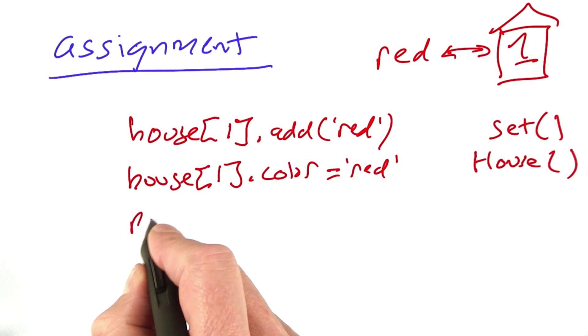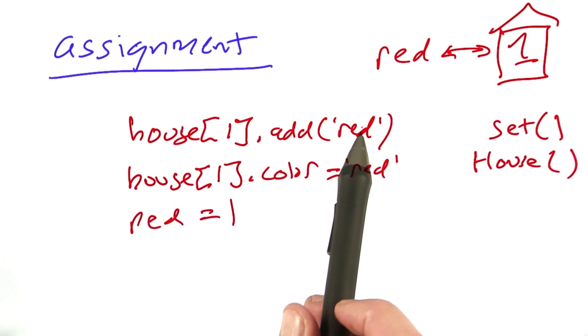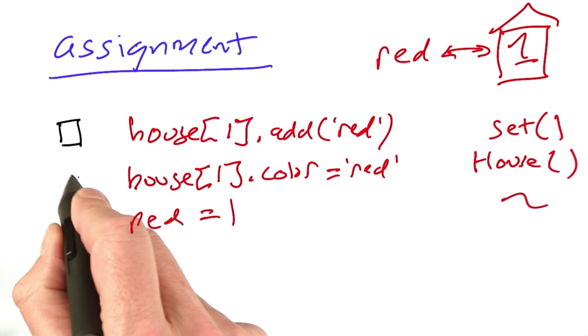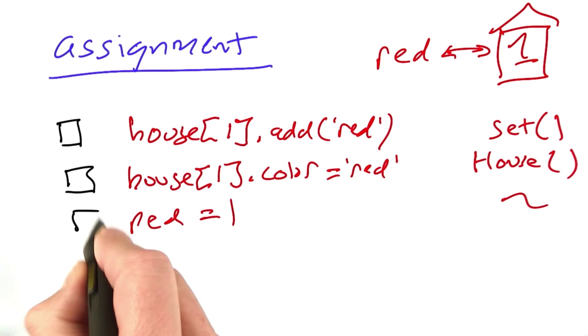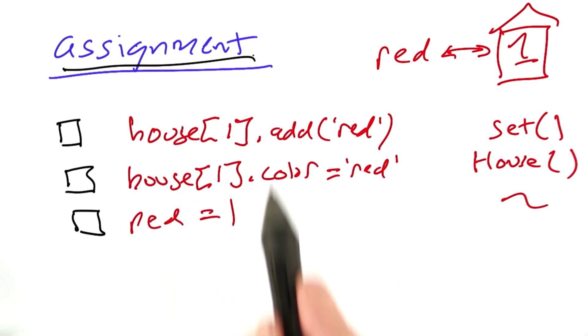Here's a third possibility. We have a variable called red. We just assign that the number 1. Here we were assigning properties to houses, and in this one we're assigning houses to properties. Now I want you to tell me, check all the approaches that you think would be reasonable designs for implementing assignment.